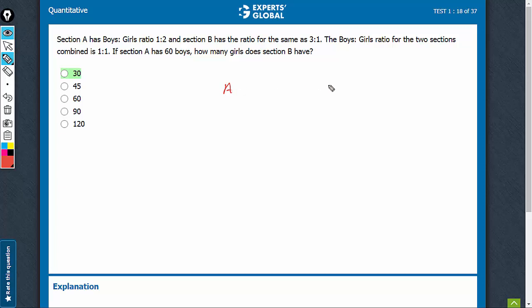Section A and Section B, the ratio of boys to girls is 1 to 2. So, boys are 1 out of 1 plus 2, which is 3.